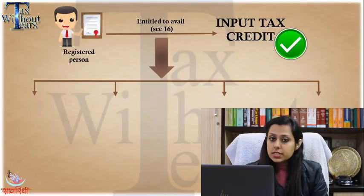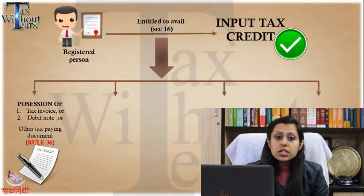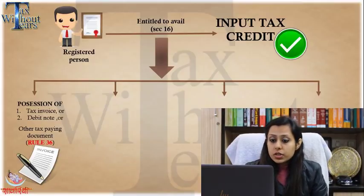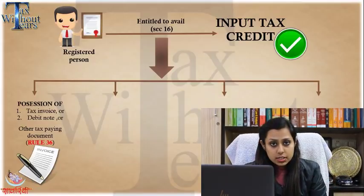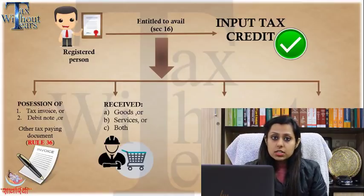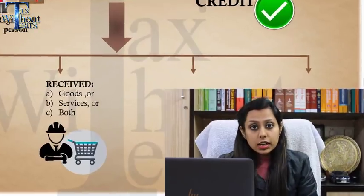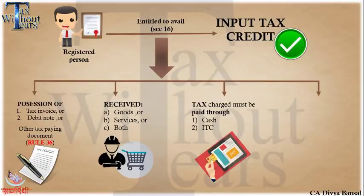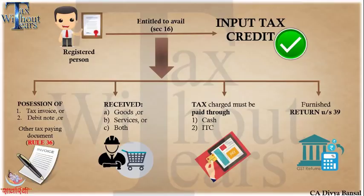The next concept is when you are actually eligible to claim input tax credit in respect of any purchase. Section 16 of CGST gives us four conditions. First, you must have the relevant document such as a tax invoice, debit note, or other notes as prescribed in Rule 36. Second, you must have received the goods and services — if you have not received them, you are not eligible to claim ITC. Third, tax must have been paid on such purchase either by cash or by credit. Fourth, you must have furnished your returns as per Section 39 — if you are a defaulter in filing returns, you cannot book your credit.